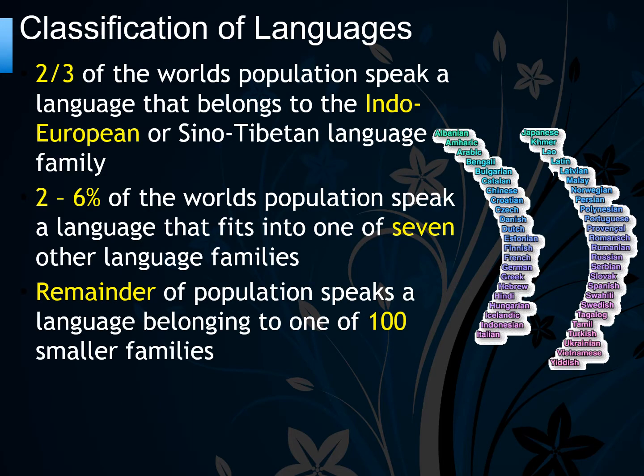Two-thirds of the world's population speaks a language belonging to the Indo-European or Sino-Tibetan language family, those being the two largest, with Indo-European being the largest. Two to six percent speaks a language in one of the other seven major language families, and the remainder speaks a language from one of hundreds of much smaller families.